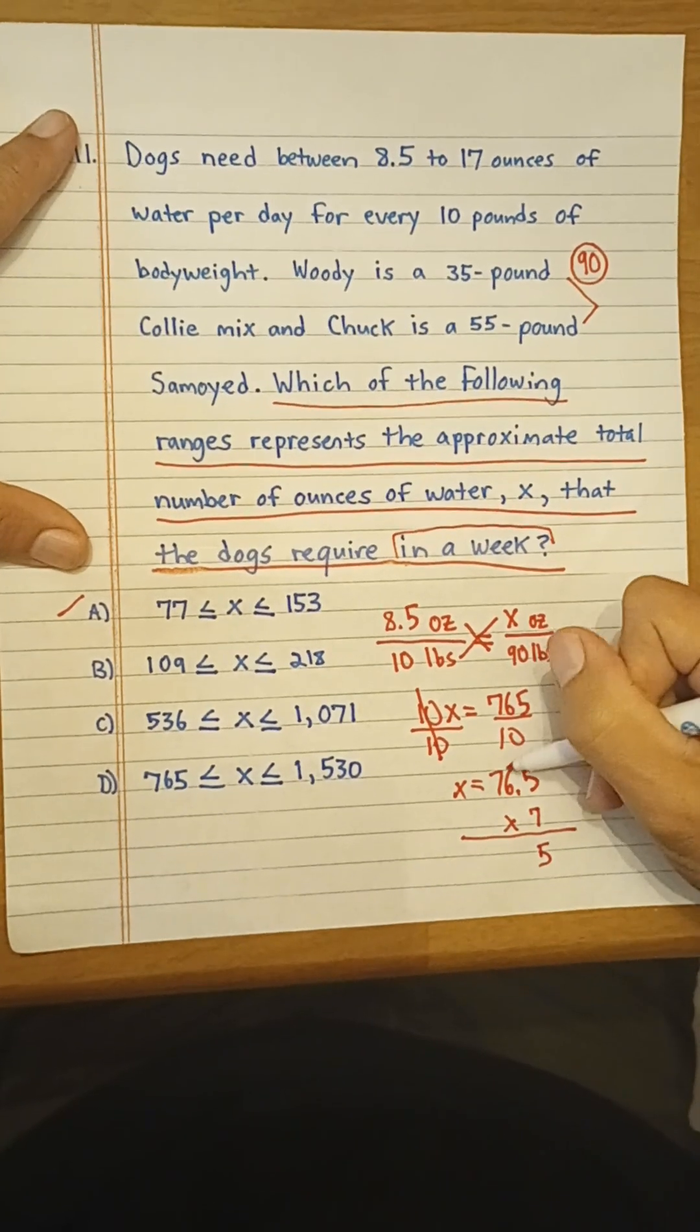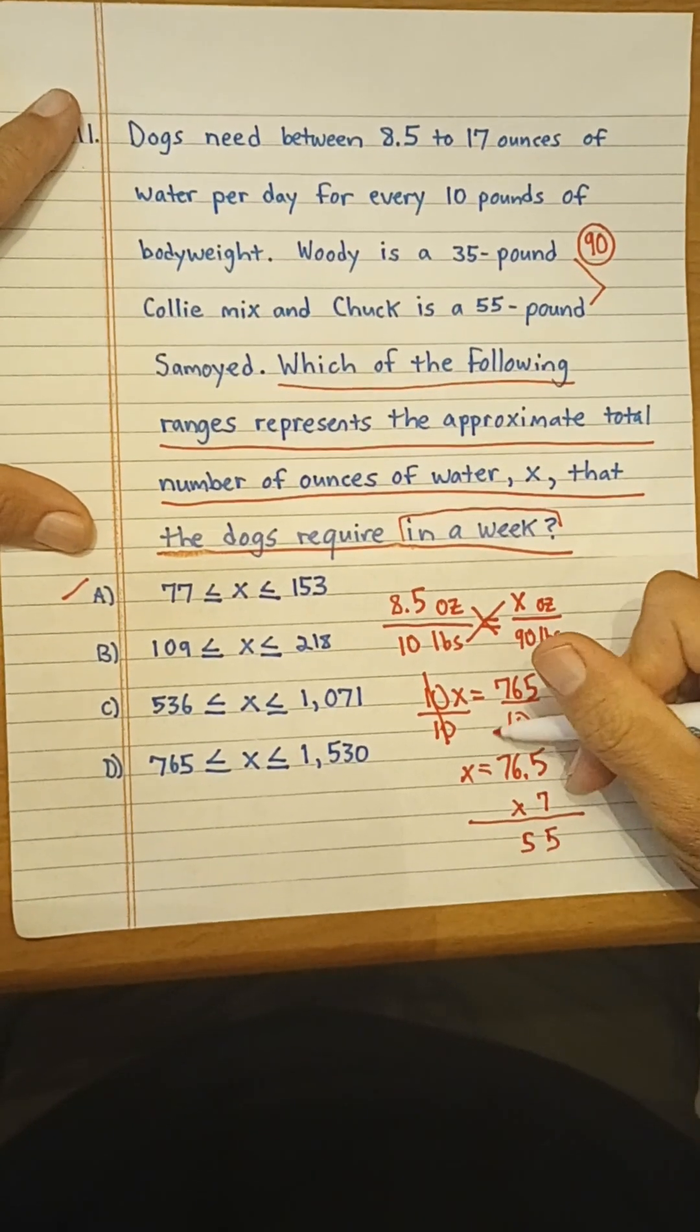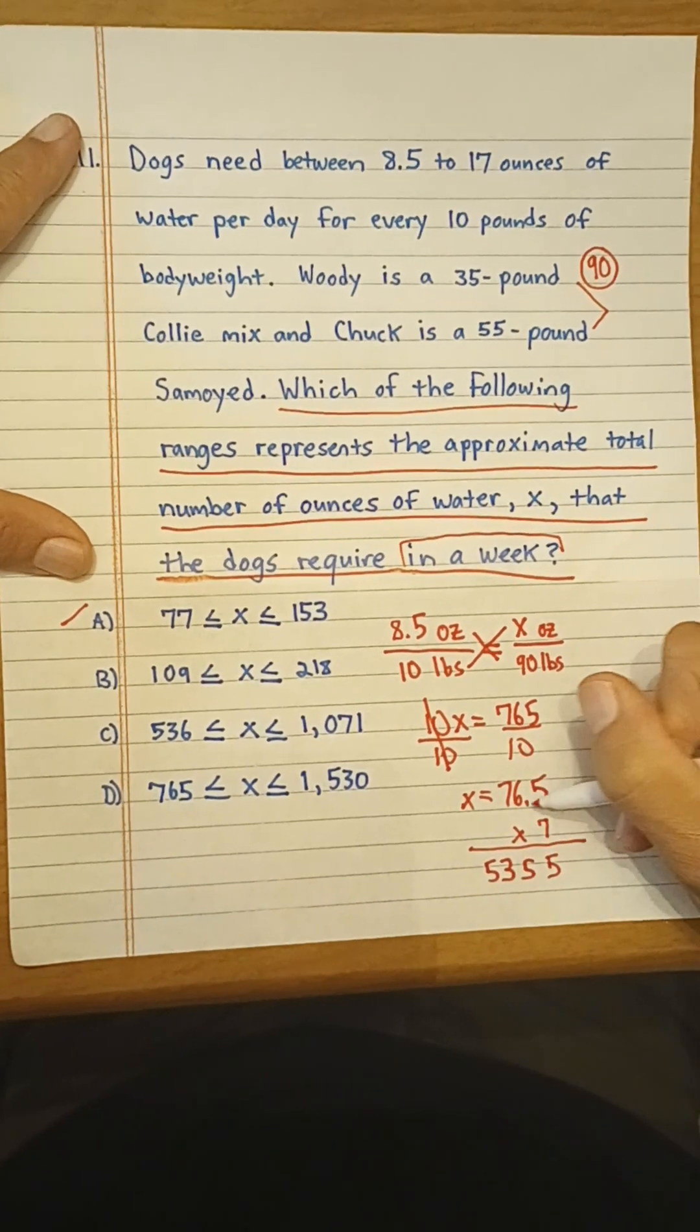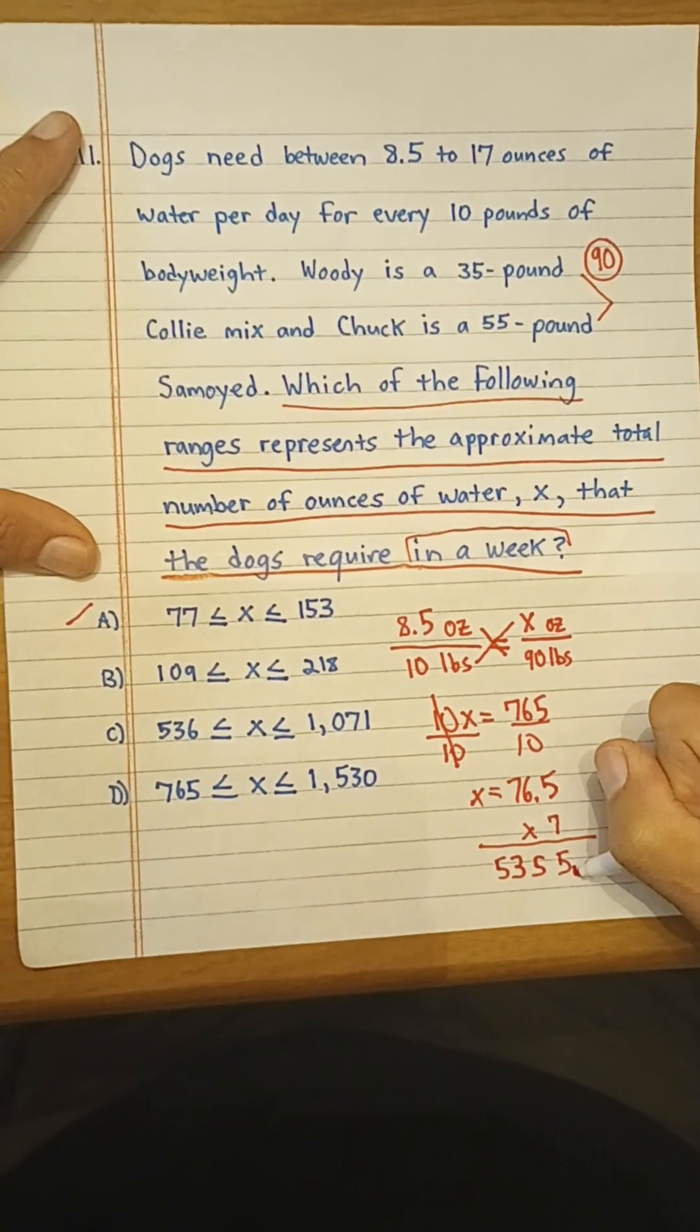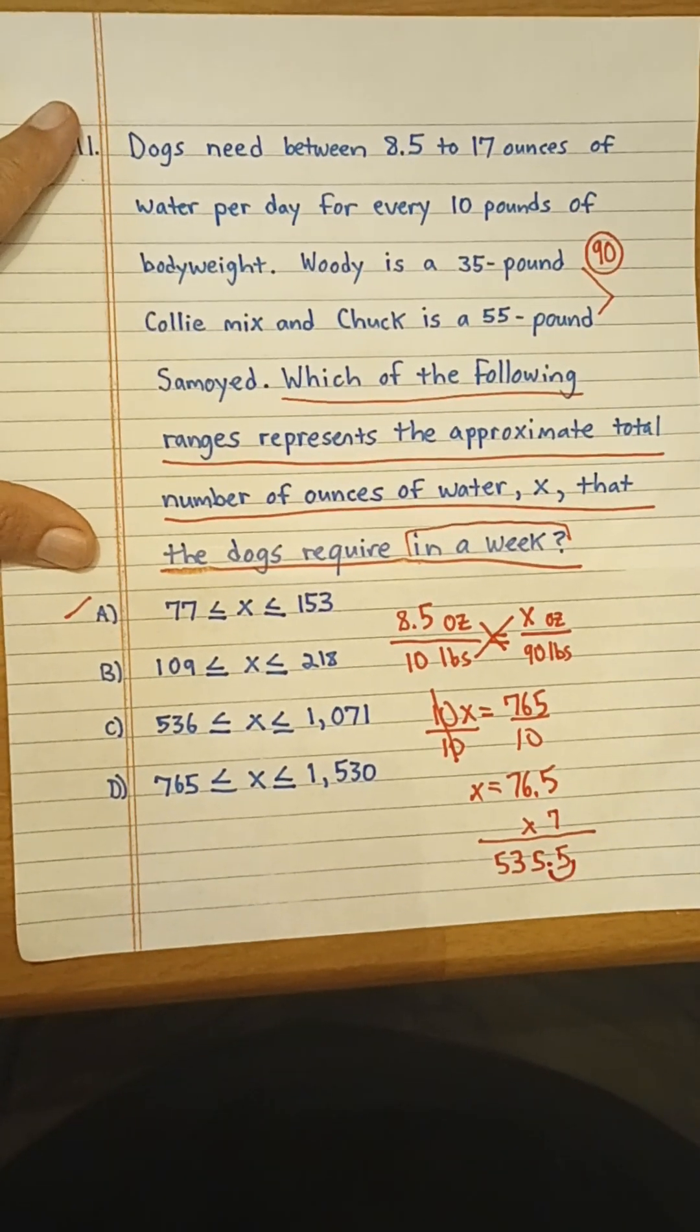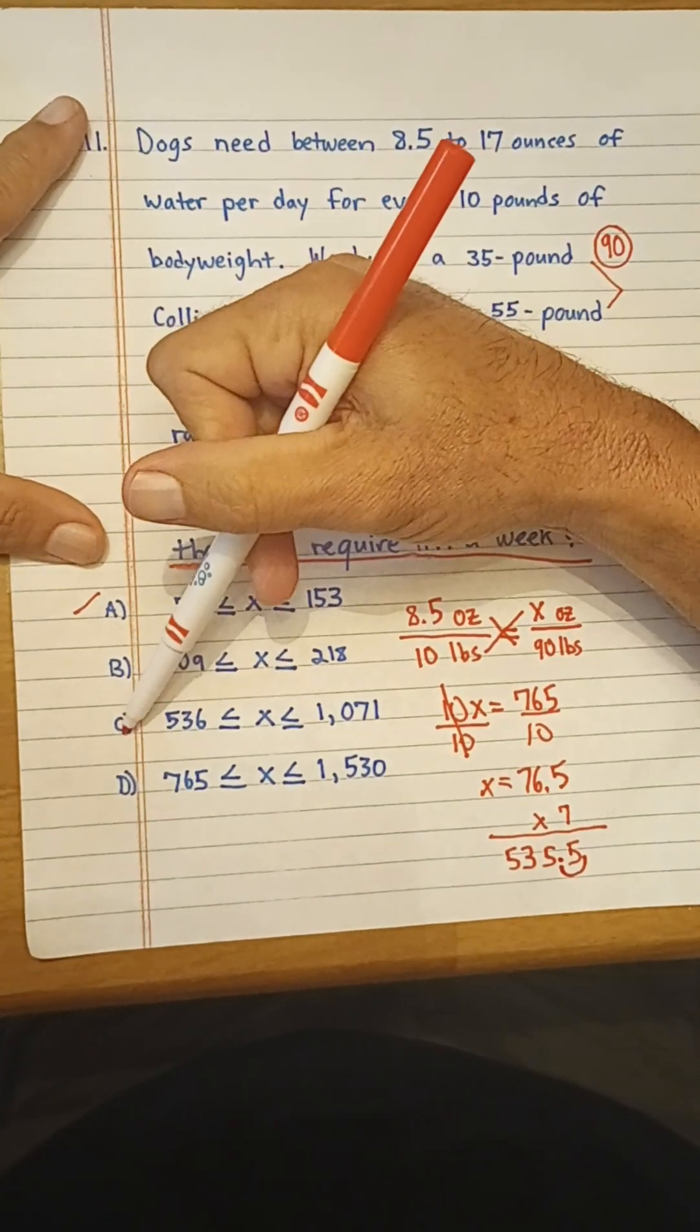We get 5 carry the 3, 5 carry the 4, 53. We have one number to the right of the decimal, we bring it over. 535.5, which rounds up to 536. And our answer is C as in cat.